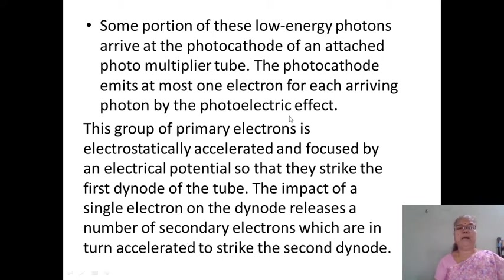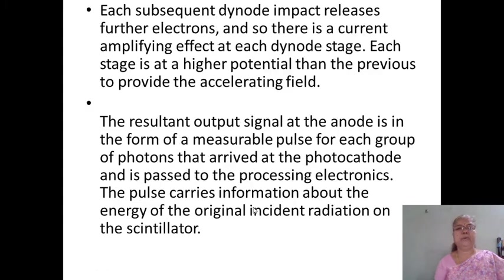This group of primary electrons is electrostatically accelerated and focused by an electrical potential so that they strike the first dynode of the tube. The impact of a single electron on the dynode releases secondary electrons, which are in turn accelerated to strike the second dynode. Each subsequent dynode impact releases further electrons, giving a current amplifying effect at each dynode stage. Each stage is at a higher potential than the previous to provide the accelerating field. The resultant output signal at the anode is in the form of a measurable pulse.